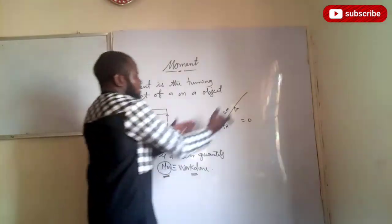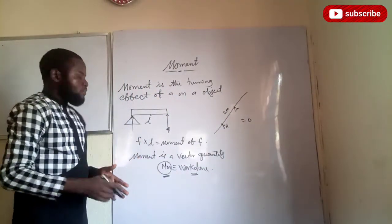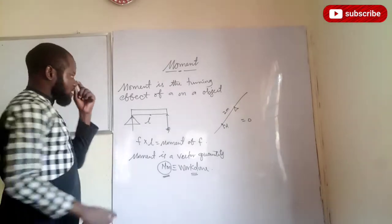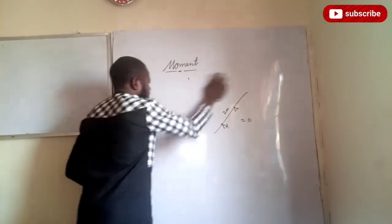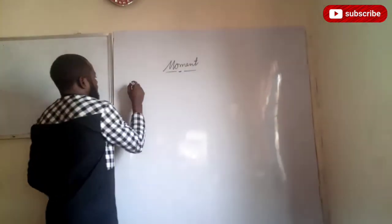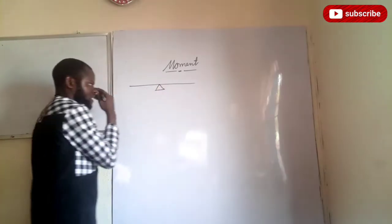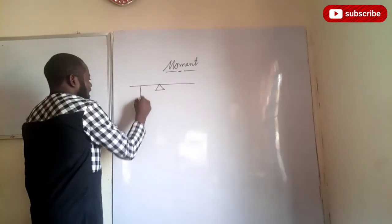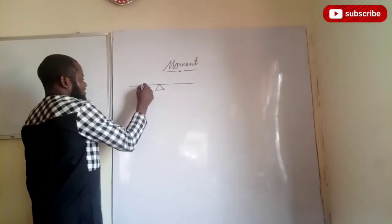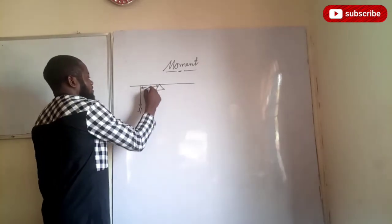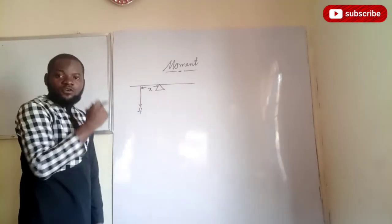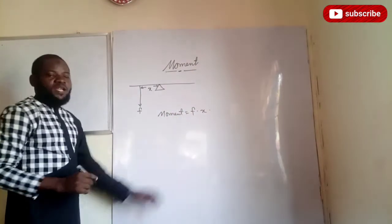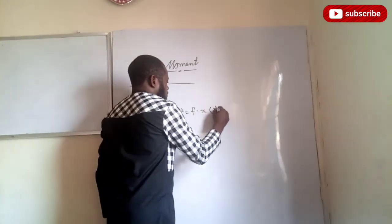We've understood that when there is no perpendicular distance, moment is equal to zero. When there is perpendicular distance, the moment is the product of force and perpendicular distance. If a body is suspended on an axis of rotation — the fulcrum, pivot, or knife edge — and I apply a force F downward, the distance between F and the fulcrum is x. This x is the perpendicular distance. Therefore, moment is force multiplied by x, and the unit would be newton metres.